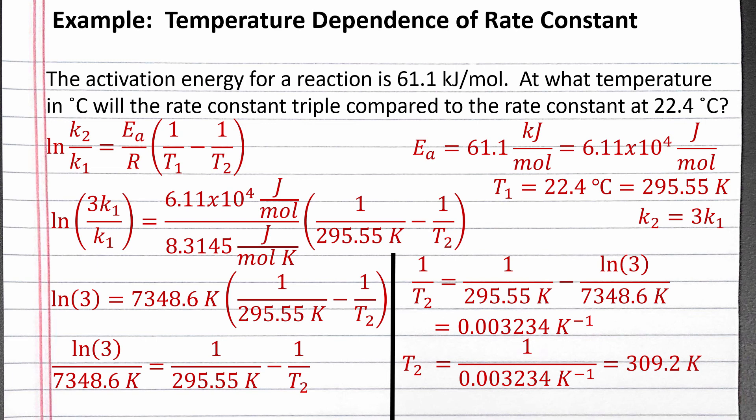Our problem asks for the temperature in degrees Celsius, so we need to subtract 273.15 to get 36.1 degrees Celsius. So at 36.1 degrees Celsius, the rate will triple compared to 22.4 degrees Celsius for this reaction.